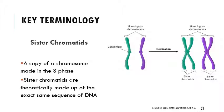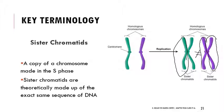Sister chromatids are copies of chromosomes made during the S phase, or synthesis phase, of the cell cycle. They are theoretically made of the exact same sequence of DNA unless there's a typo or problem with the DNA replication process. Here we have homologous chromosomes — maybe one from mom and one from dad. After replication, you have two identical green sister chromatids and two identical purple sister chromatids. The green ones are sisters to each other, and the purple ones are sisters to each other — but they are not identical to the green ones. They're only identical to the chromatids they're attached to.